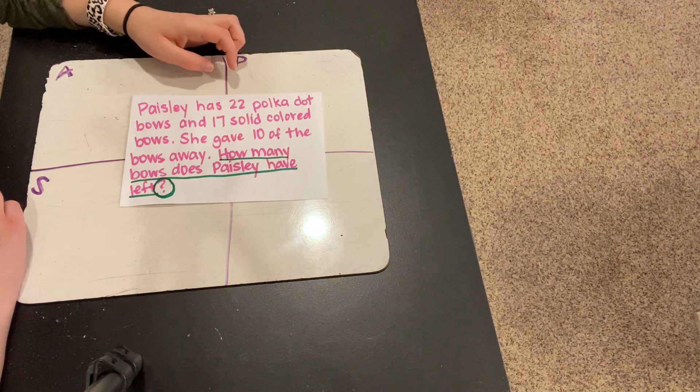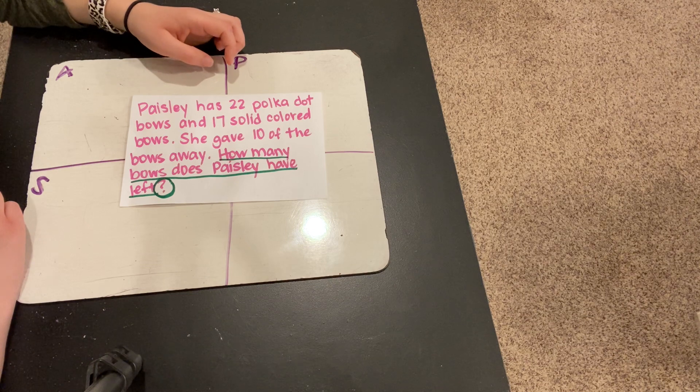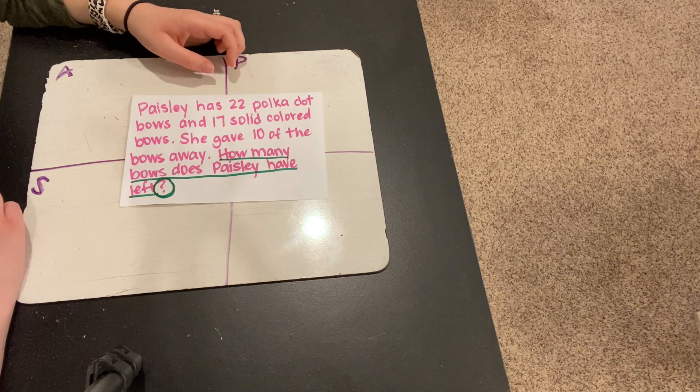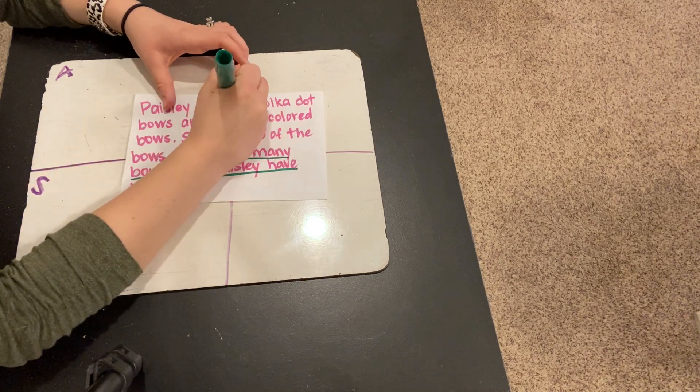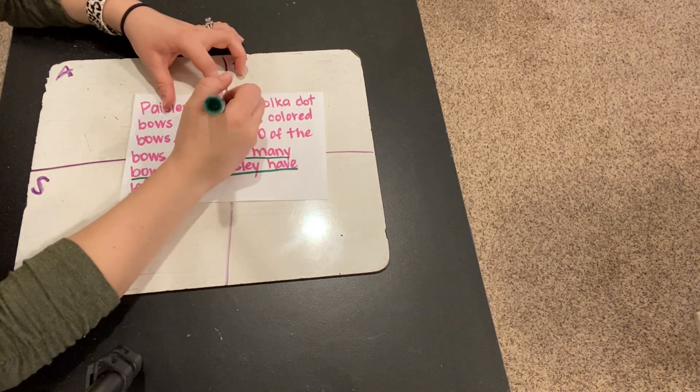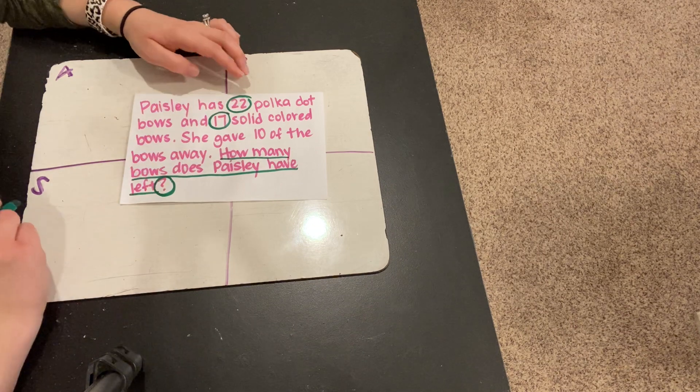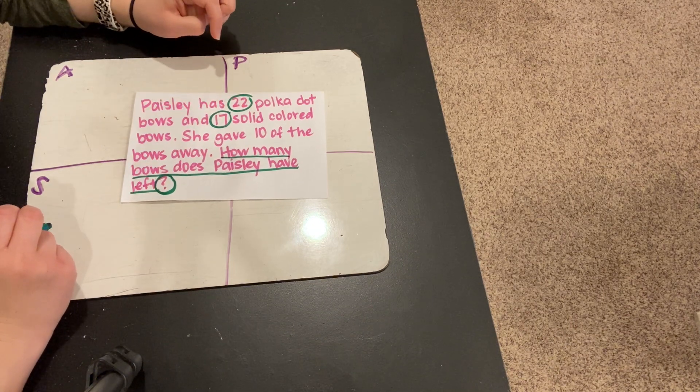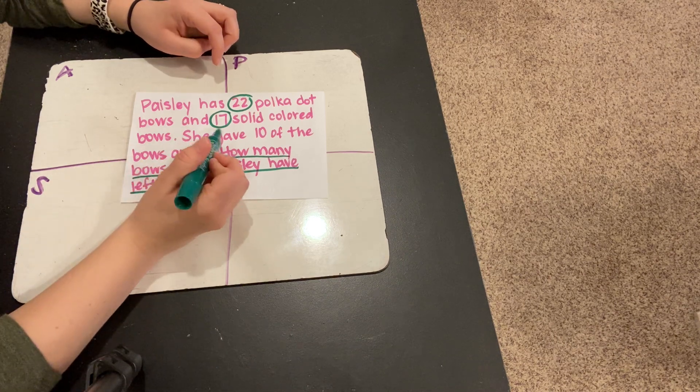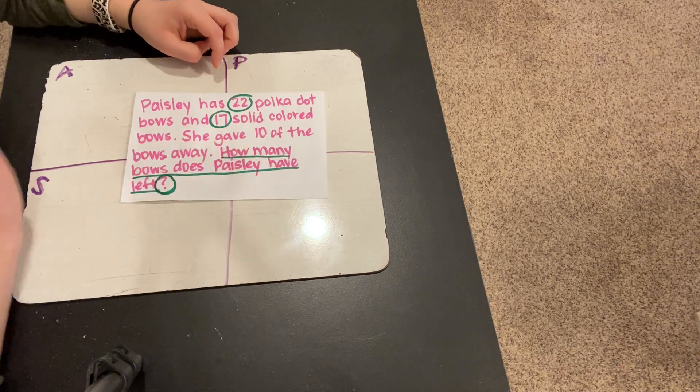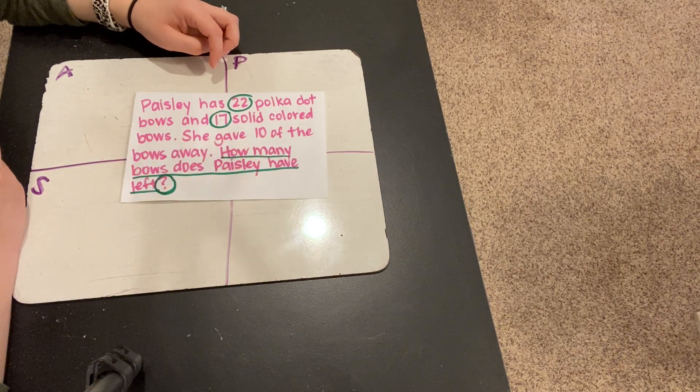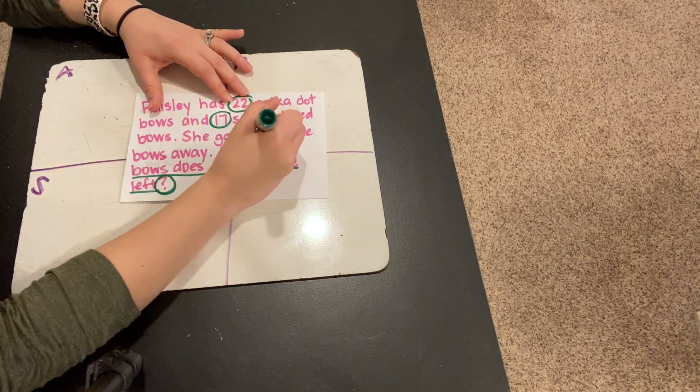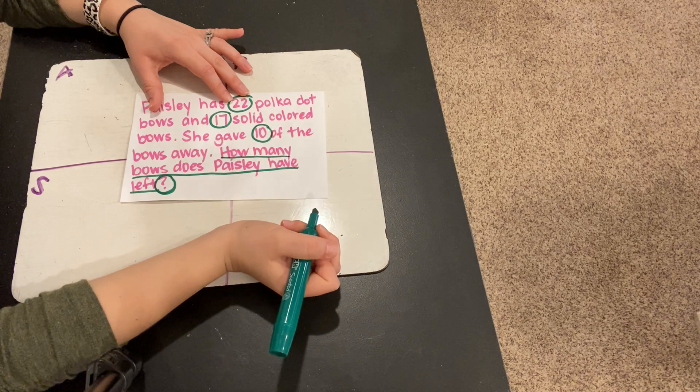Now let's go back through and read and listen for what's important about bows that may help us to answer that question. Paisley has 22 polka dot bows and 17 solid colored bows. What's important there? 22 polka dot bows and then 17 solid colored bows. 22 and 17 are important because it tells us the number of bows. She gave 10 of the bows away. What's important in that sentence?